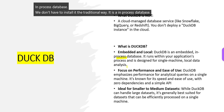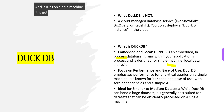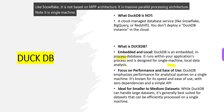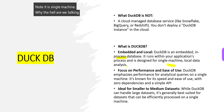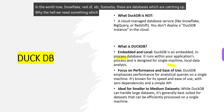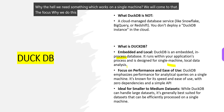DuckDB runs on a single machine. It does not have parallelism like Snowflake — it is not based on MPP architecture, that is Massive Parallel Processing. So why are we talking about this database when Snowflake, Redshift, Synapse are all catching up? The focus and reason we use DuckDB is performance and ease of use.